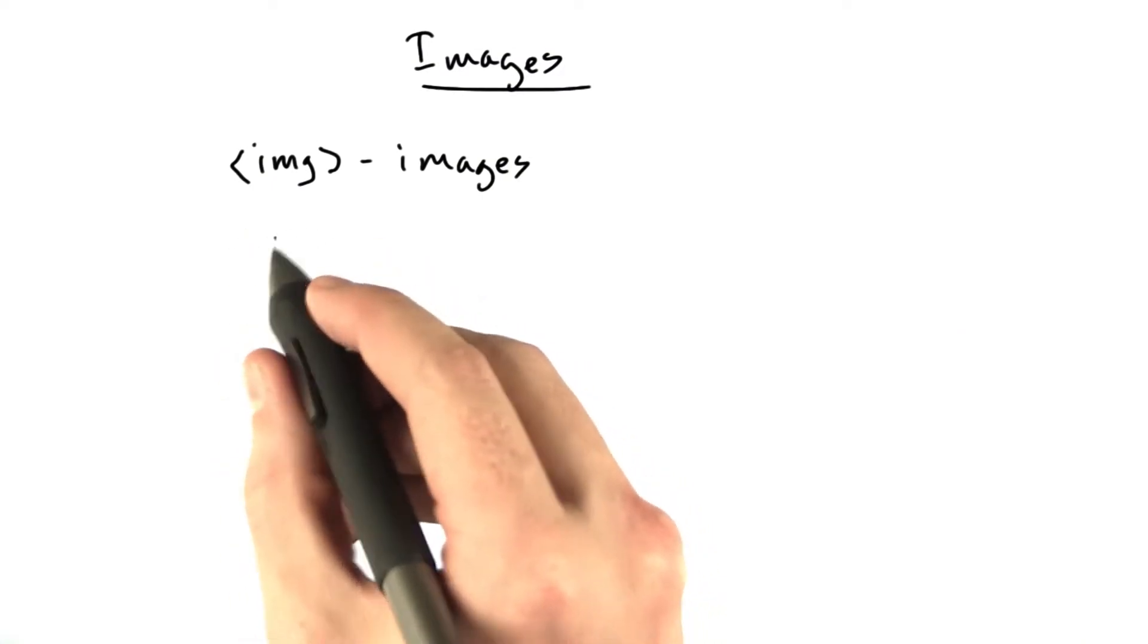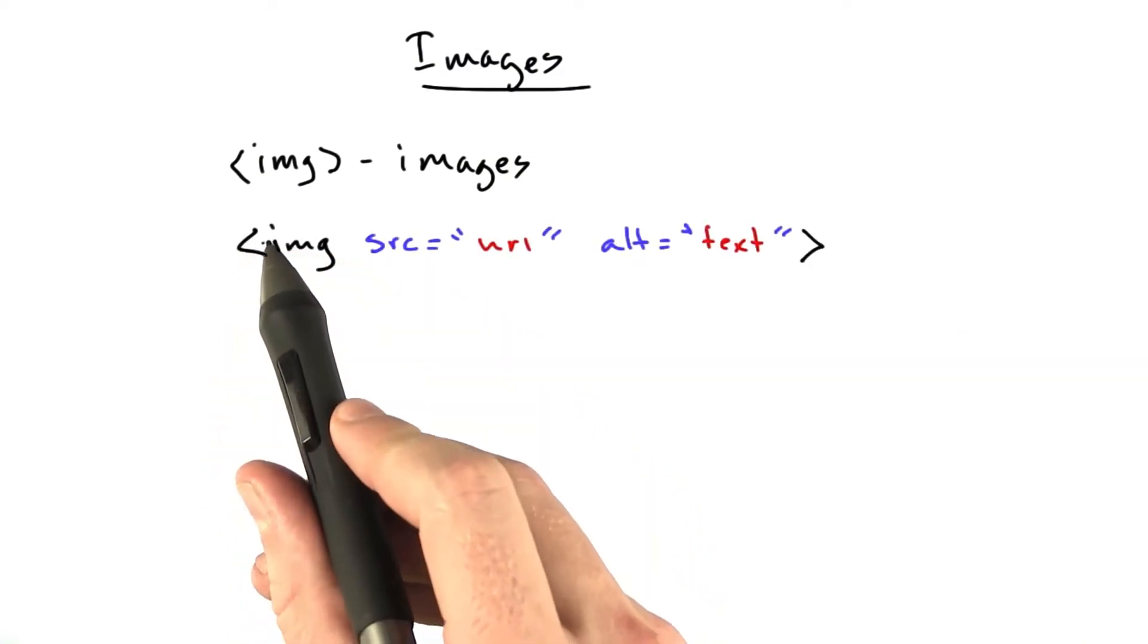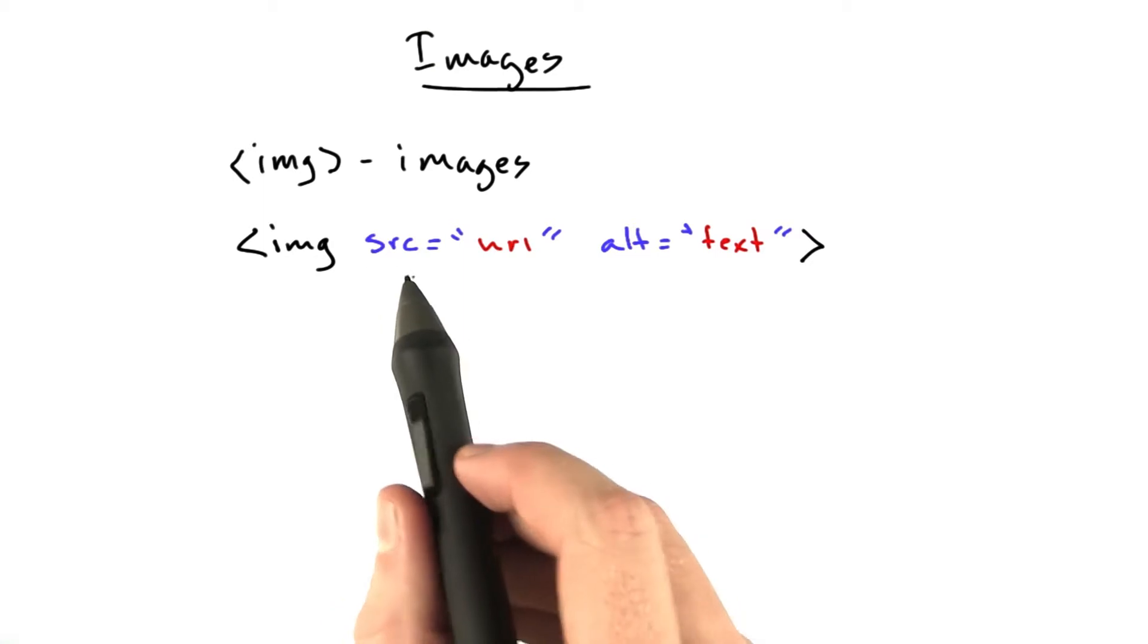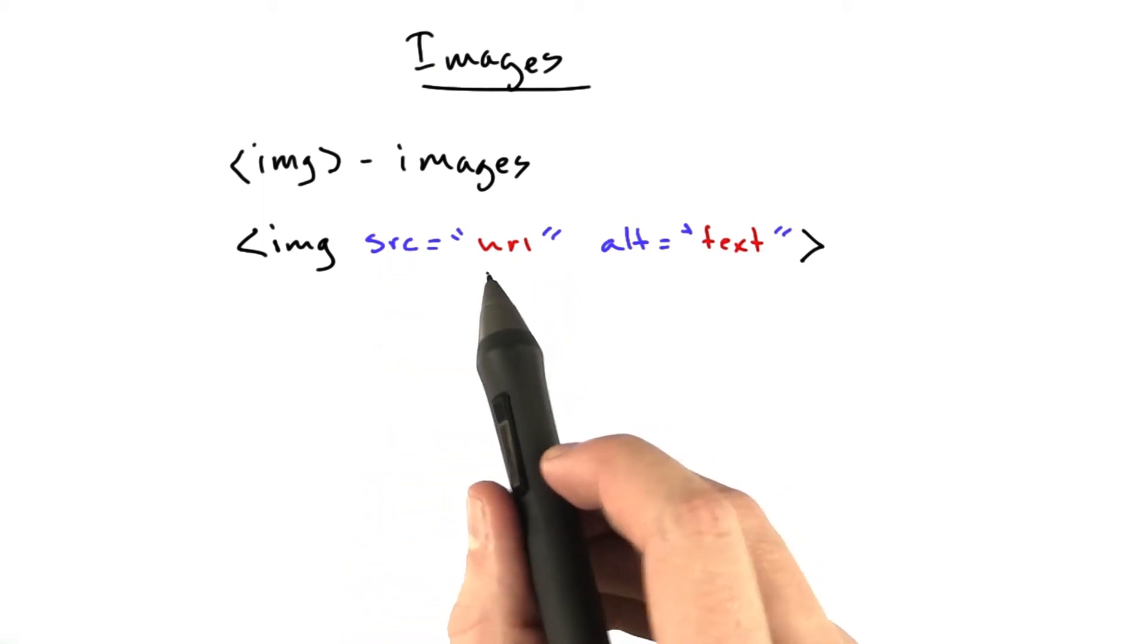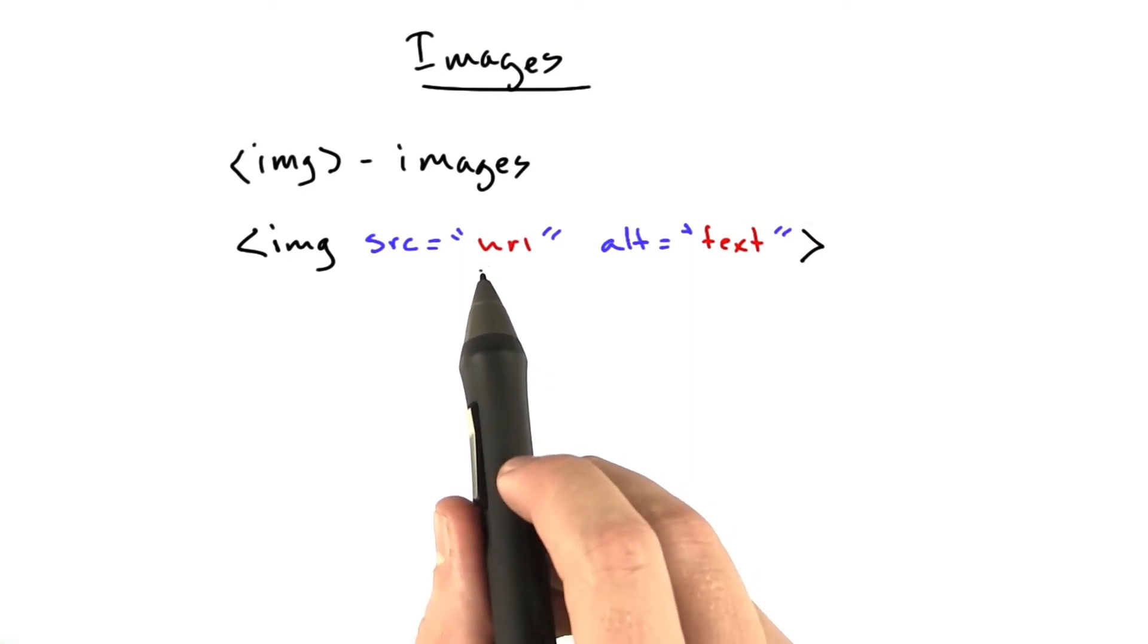It has the following structure, the opening img tag. It has an attribute called source, src equals, and this equals the URL. This is the URL of the image to download.